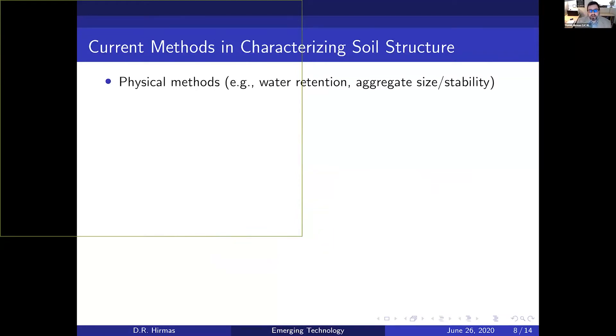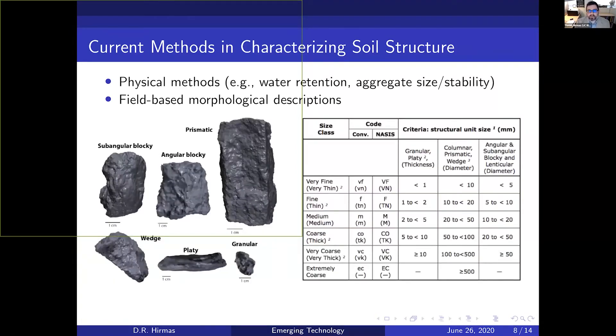The way we characterize the soil currently is through physical methods—things like water retention and aggregate size and stability. But these are proxy measurements. They're not directly looking at the aggregation or arrangement. We can use field-based morphological descriptions. The NRCS will dig a pit and describe properties including soil structure. They'll describe it in qualitative classes—things like subangular blocky, angular blocky, or wedge, with a size class. It's useful information, but the problem is it's difficult to take that qualitative information and use it for quantitative assessment. It's difficult to put it into any prediction model.